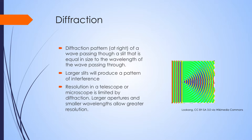Diffraction, as we saw in the double slit experiment, is where light is bent by passing through a small opening. A uniform wave front of light interacting with a slit creates a diffraction pattern. In order to create diffraction, you need a slit that is similar in size to the wavelength of the light passing through it. Larger slits produce interference. Resolution of a telescope or a microscope is limited by diffraction — larger apertures and smaller wavelengths will allow greater resolution. However, there is a limit to how small you can make visible light in terms of wavelength. The eye itself has a small aperture known as the pupil, so light can diffract or interact with this structure as well.